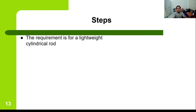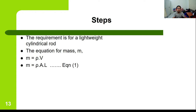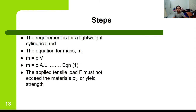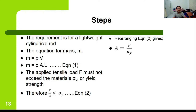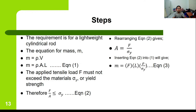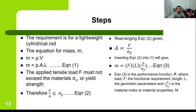We start with the requirement: a lightweight cylindrical rod. The equation for mass is M = density × volume, and volume is area × length. The applied tensile load F must not exceed the material's yield strength σ_Y, so F/A ≤ σ_Y. Rearranging gives A = F/σ_Y. Substituting into the mass equation gives M = F × L × (ρ/σ_Y). In this performance equation, load F is the functional requirement, length L is the geometric parameter, and density over yield strength (ρ/σ_Y) is the material index M.